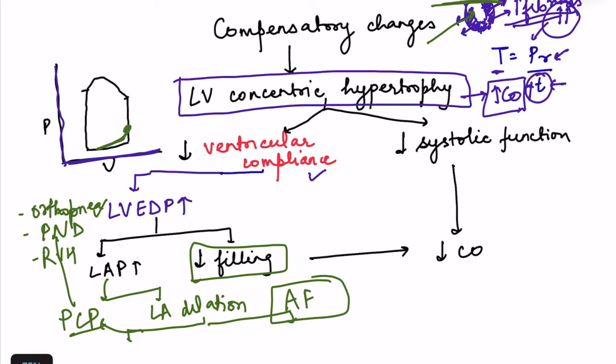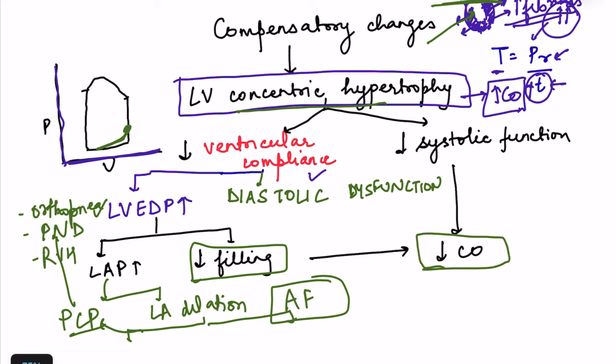Left ventricular concentric hypertrophy causes decreased ventricular compliance, producing diastolic dysfunction with decreased filling and reduced cardiac output — this is forward failure. Additionally, the irreversible fibrosis in concentric hypertrophy decreases systolic function since fibrotic tissue cannot contract. So both diastolic and systolic dysfunction contribute to a decrease in cardiac output.